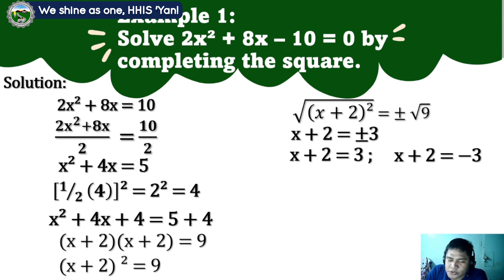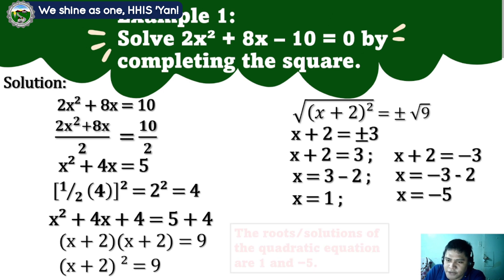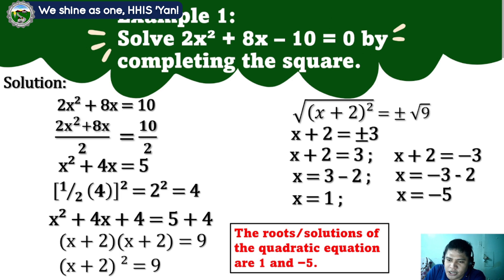For the first solution: x plus 2 equals 3. Subtract 2 from both sides: x equals 3 minus 2, so x equals 1. For the second solution: x plus 2 equals negative 3. Subtract 2 from both sides: x equals negative 3 minus 2, so x equals negative 5. The roots and solutions of the quadratic equation are 1 and negative 5.